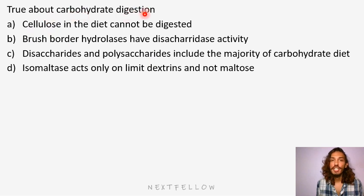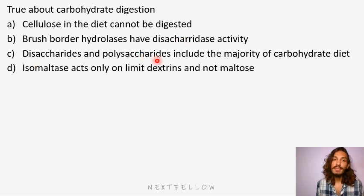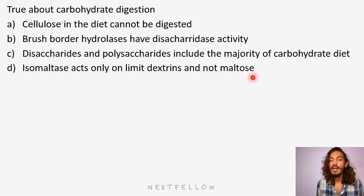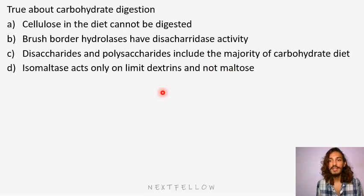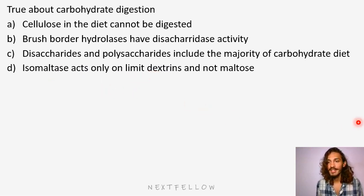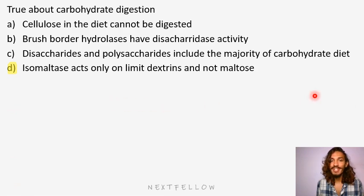True about carbohydrate digestion: Cellulose in the diet cannot be digested — that is true. Brush border hydrolases have disaccharidase activity — that is also true. Disaccharides and polysaccharides include the majority of carbohydrates — that is also true. Isomaltase acts only on limit dextrins and not maltose — this is where we had talked about earlier: isomaltase acts not only on the limit dextrins but also on the maltose. That is it with carbohydrate digestion. Thank you.